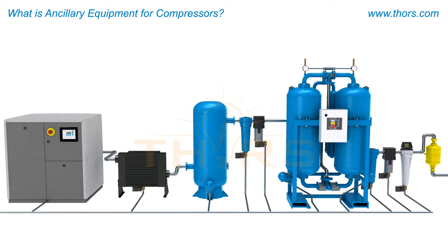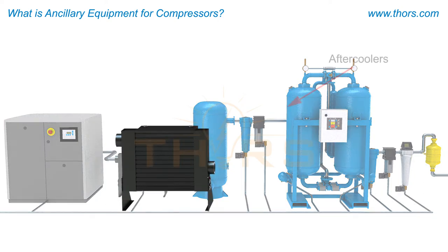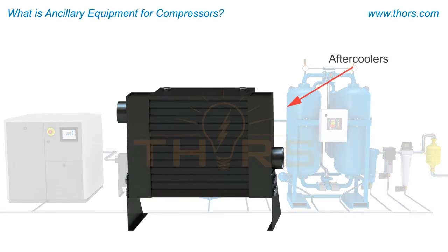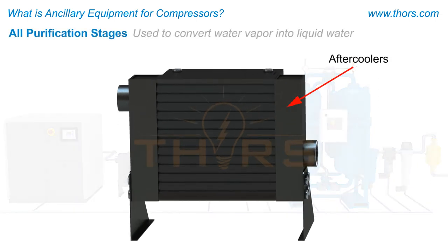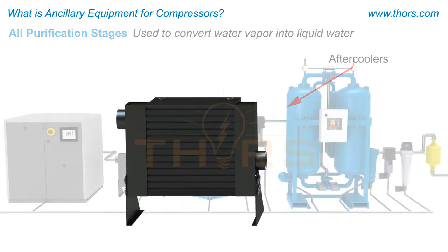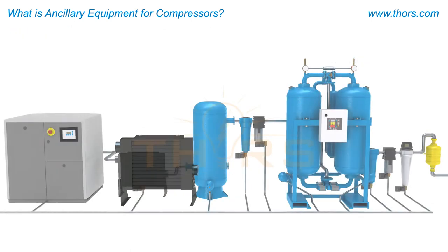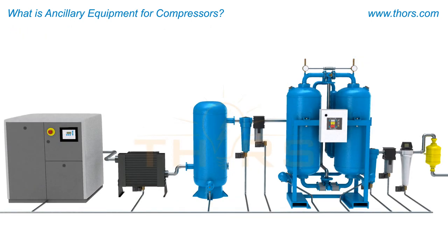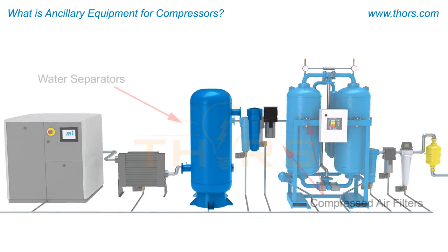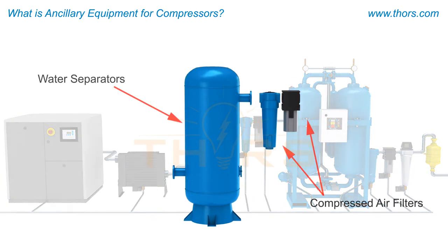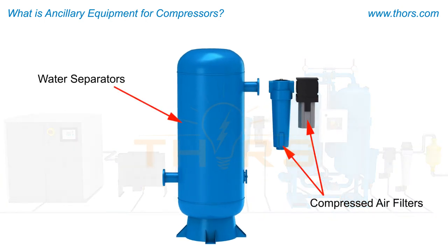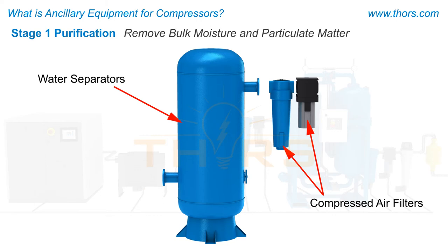After coolers are used in all stages to convert water vapor into liquid water. Water separators and compressed air filters are used during stage 1 purification to remove the bulk moisture and particulate matter from the compressed air stream.